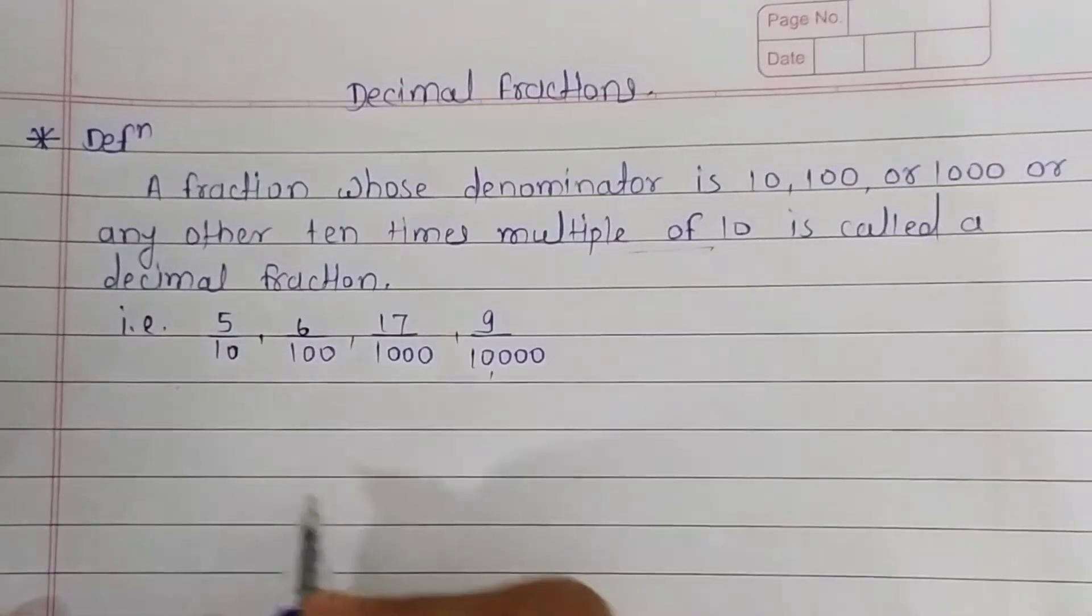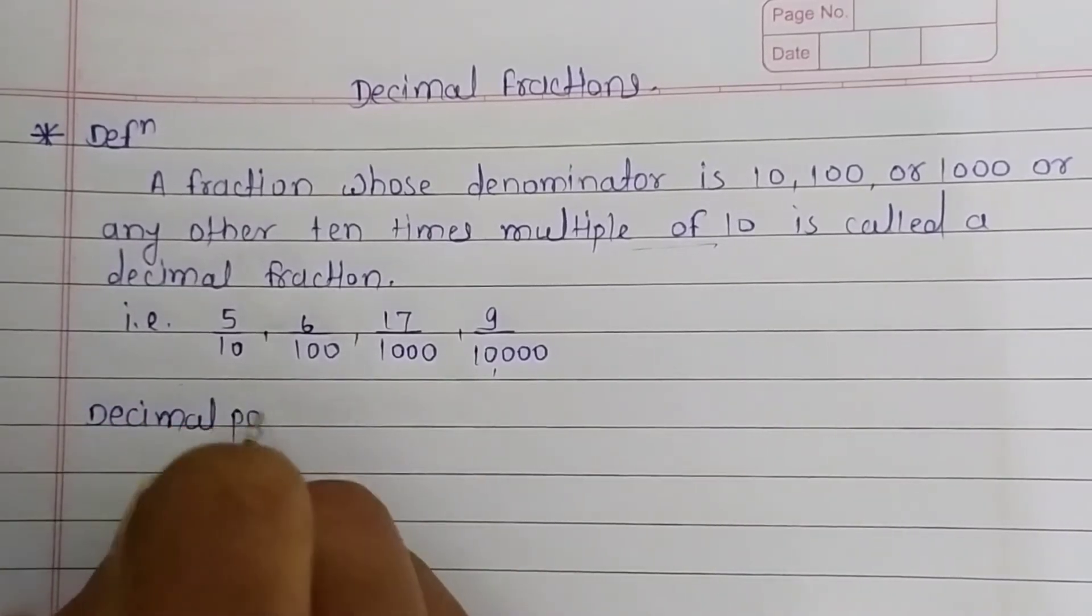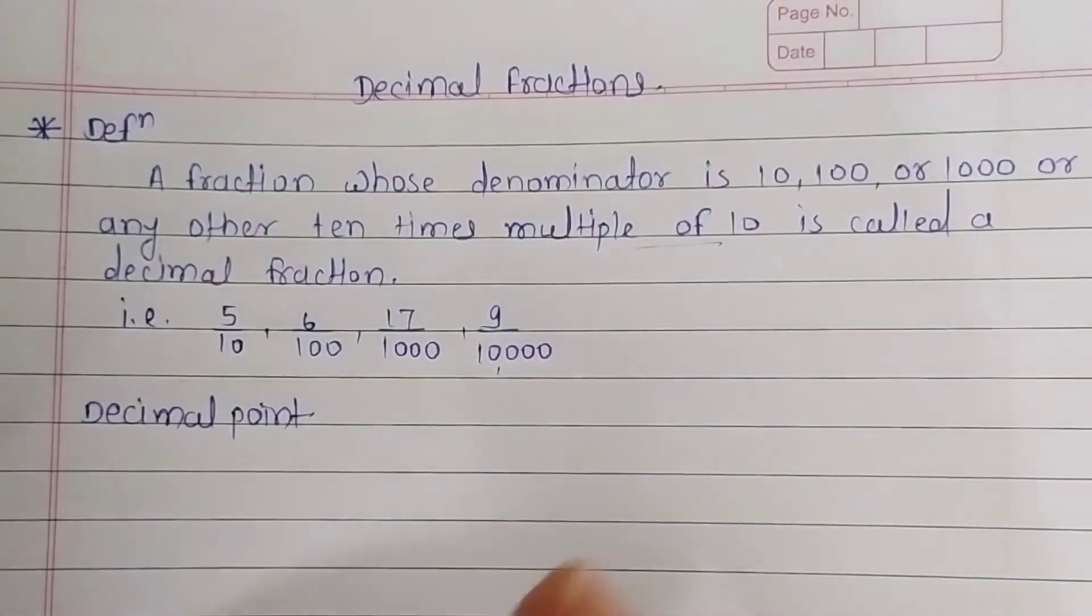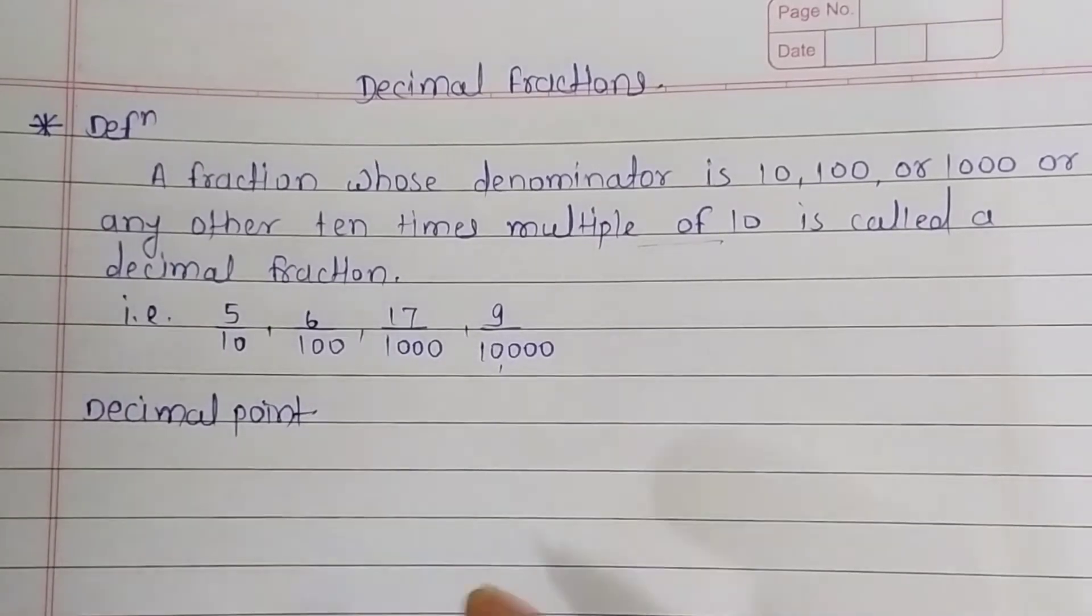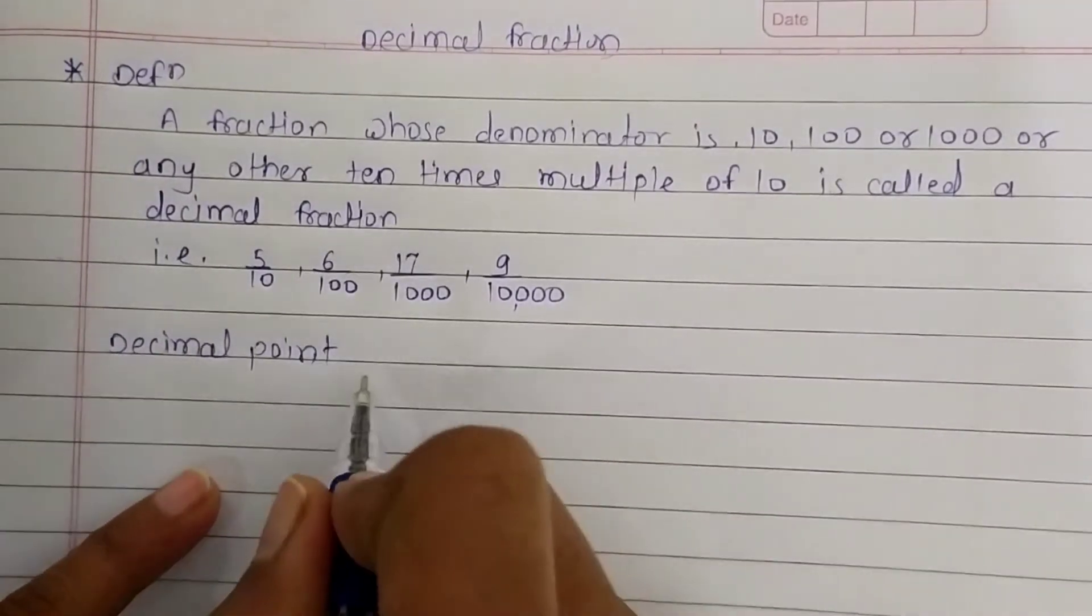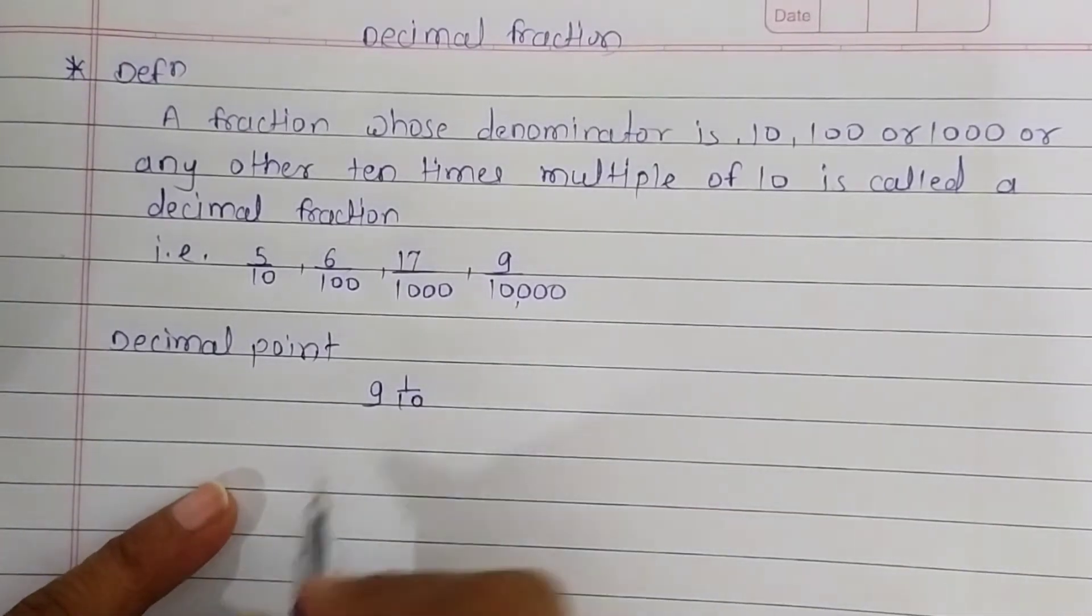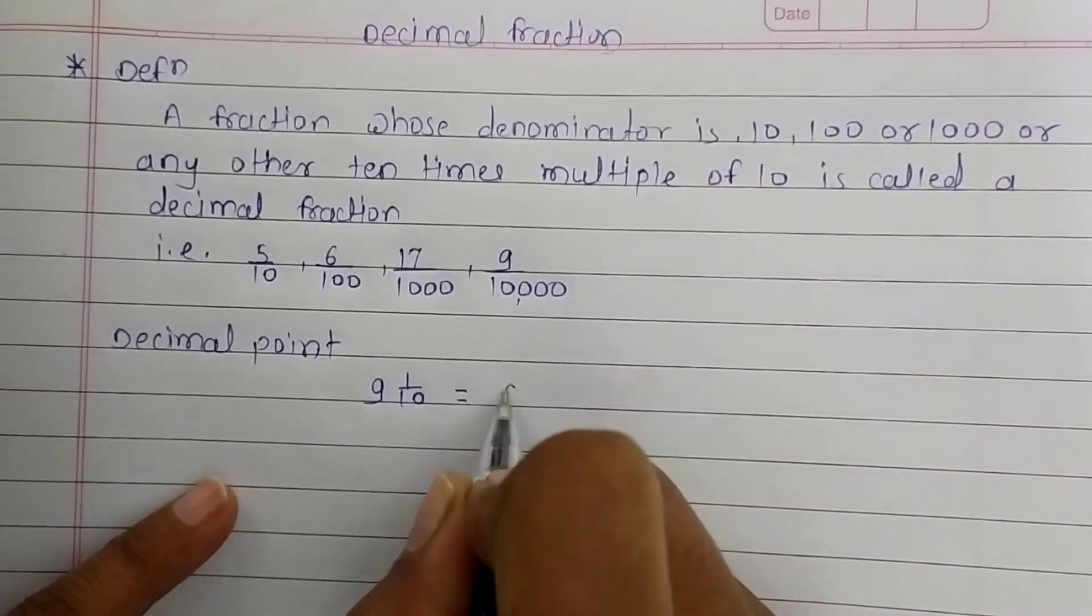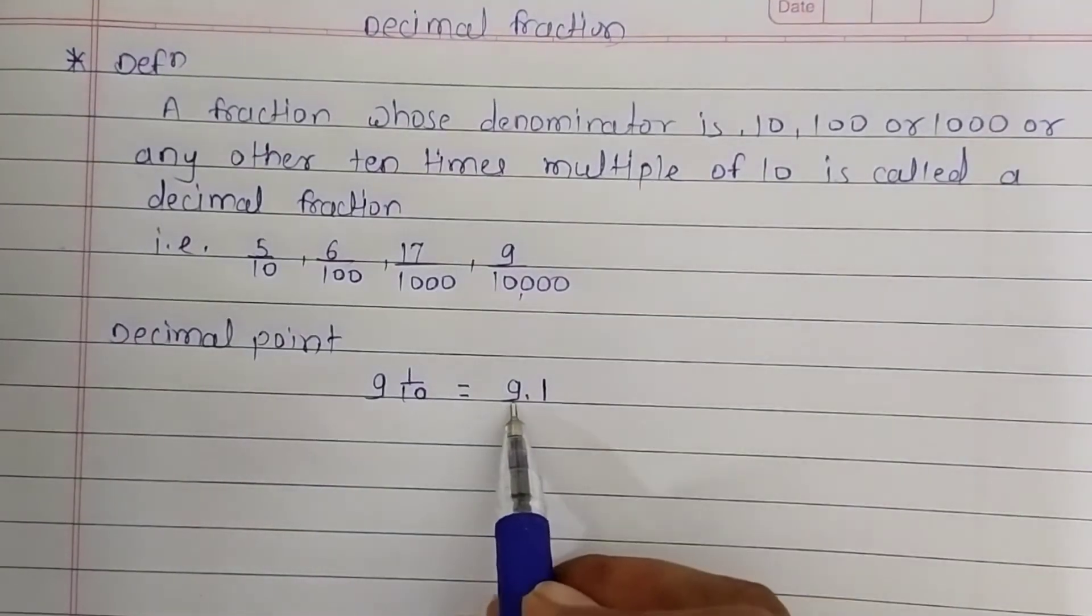Now we are going to learn about decimal point. What is a decimal point? Generally, a decimal fraction is written in a convenient way. For example, when we take a fraction like 9 and 1 upon 10, we write it in a convenient way like this. This is read as 9.1.